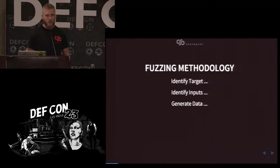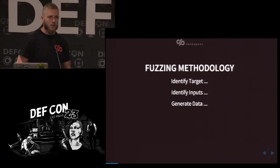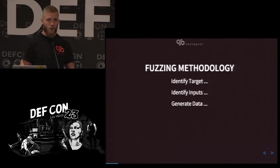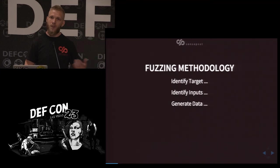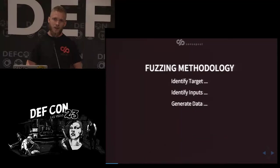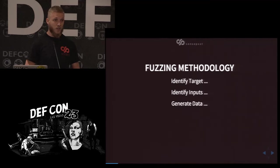Once you've identified inputs, you need to generate test data. Generating test data falls into two categories: dumb fuzzing or smart fuzzing. Dumb fuzzing is something we've all done before — simply inserting a thousand A's into an input text box and seeing if the application crashes, applying data without any prior knowledge of what the application is expecting. Smart fuzzing, on the other hand, uses knowledge about the application or inputs to generate test data — usually taking valid data and mutating it in unexpected ways. This is where our fuzzer falls in.